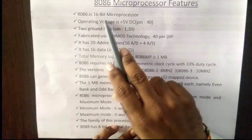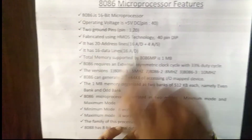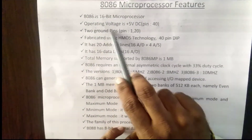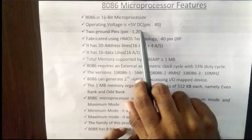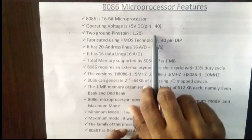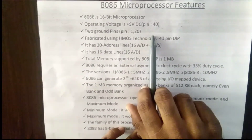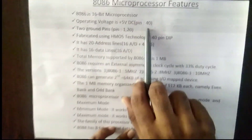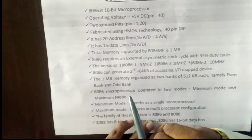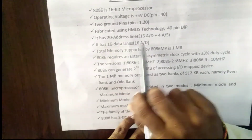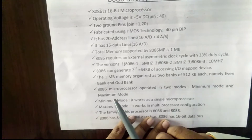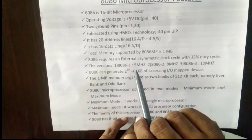This 8086 microprocessor is a 16-bit microprocessor which is operated at 5 volts DC. The 5 volts DC is given to the 8086 microprocessor at pin number 40. The total number of pins for the 8086 microprocessor is 40.